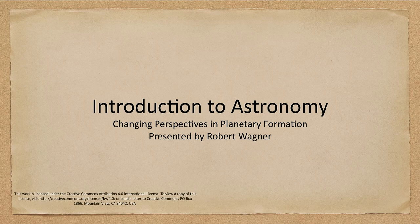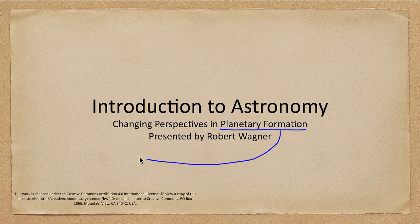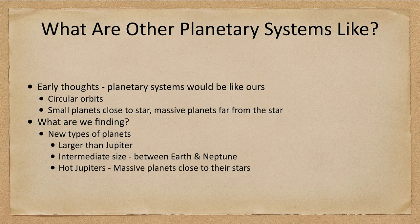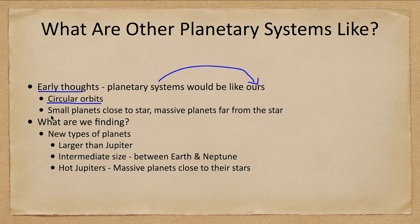Greetings and welcome to the introduction to astronomy. In this lecture we are going to talk about planetary formation. We looked at this previously but we are going to look at what the discovery of all these exoplanets has done to change our perspectives on how planetary systems form. Our early thoughts were that planetary systems would be like ours, because that's the only planetary system we had to go by, and we would expect things like circular orbits.